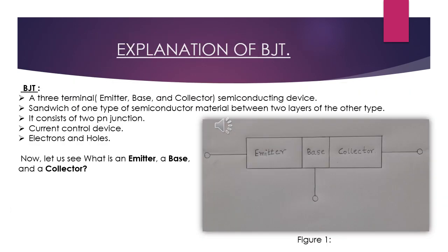A BJT is a three-terminal semiconducting device whose three terminals are called base, emitter, and collector. BJT is simply a sandwich of one type of semiconductor material between two layers of the other type. It consists of two PN junctions formed by sandwiching either P-type or N-type semiconductors between a pair of opposite sides. It is a current-controlled device that controls the amount of current that flows through it, and the charge carriers are electrons and holes.